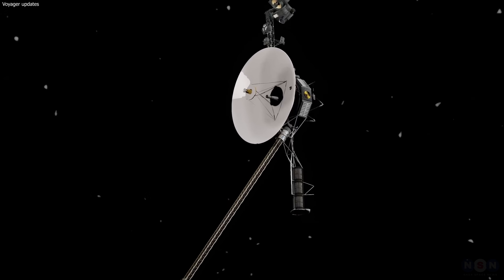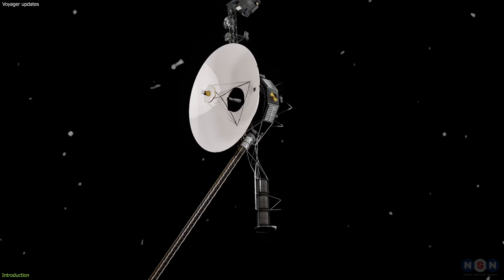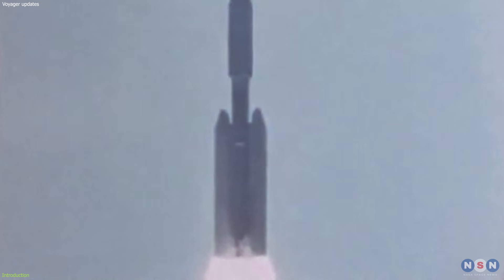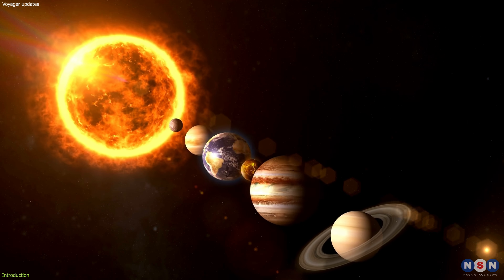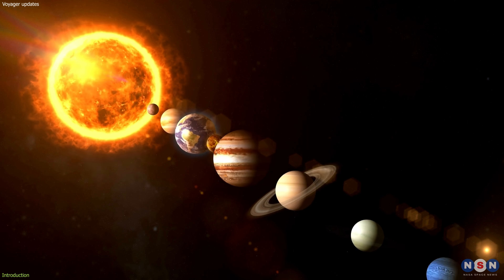The Voyager mission is one of the most ambitious and successful space exploration projects in history. It was launched in 1977 to study the outer planets of our solar system, such as Jupiter, Saturn, Uranus, and Neptune.